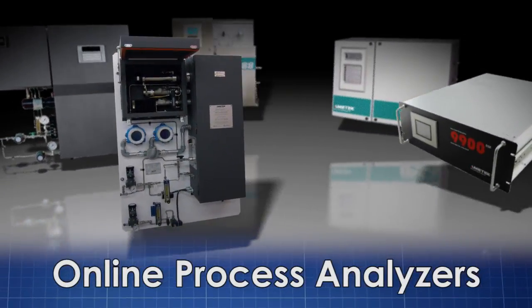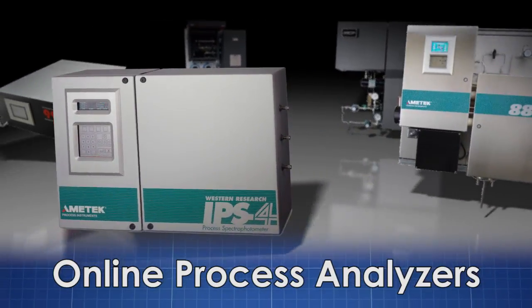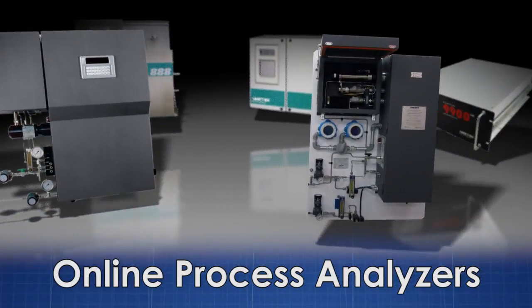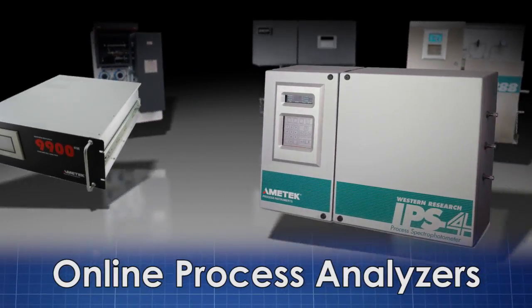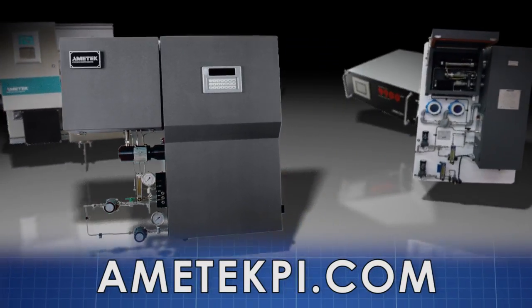Ametek Process Instruments designs and manufactures an extensive line of online process analyzers for the refining, petrochemical, and natural gas industries. Learn more about the industry-leading model 888 tail gas analyzer and other quality Ametek Process Instruments products by visiting ametek p i dot com.